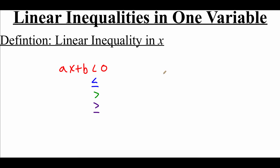As we're looking at a linear inequality, one thing that needs to be true is that the 'a' value in our inequality cannot be zero. We do need to have that variable in there, so if a was zero, it would cancel out. So we need to make sure that a is not zero to keep that variable in there.